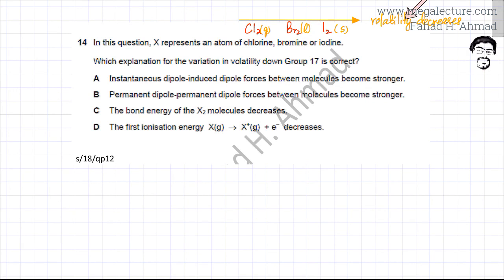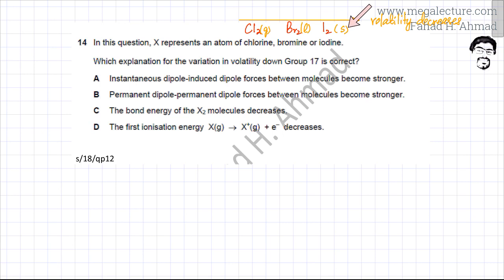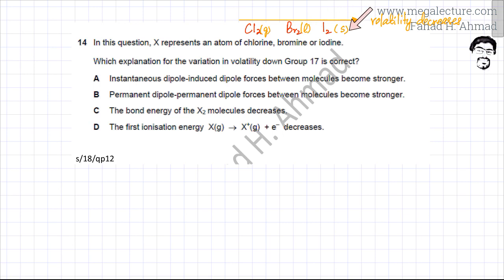The volatility — the tendency for a substance to evaporate easily — decreases down the group. Chlorine evaporates very easily; it's already a gas. Bromine evaporates quickly as well. Iodine is a solid and needs a lot of energy to evaporate. This means melting and boiling points increase down the group.